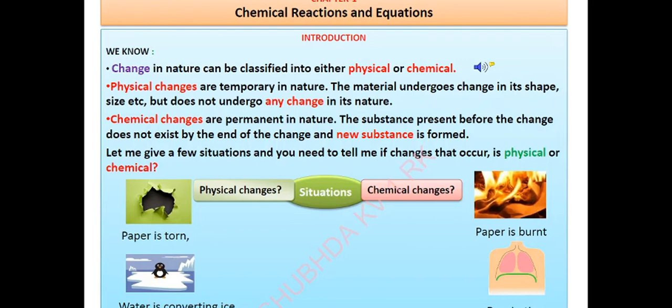Thus, it is an example of physical change. Now comes situation number 2 where paper is burnt. Here paper converts into ash. In this PDF, you can observe that paper is torn here and burnt here. After burning, the paper is converted into ash. That is, a new substance is formed. Thus, this is an example of chemical change.